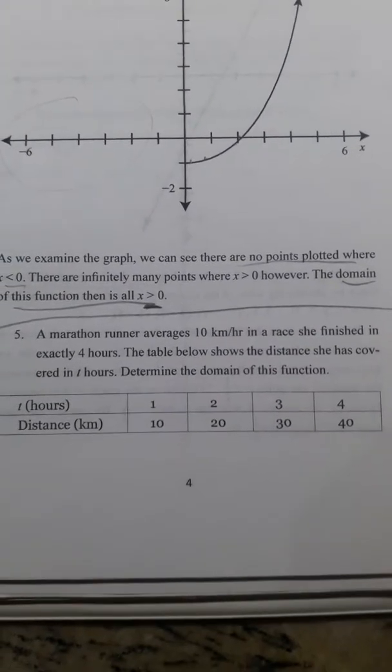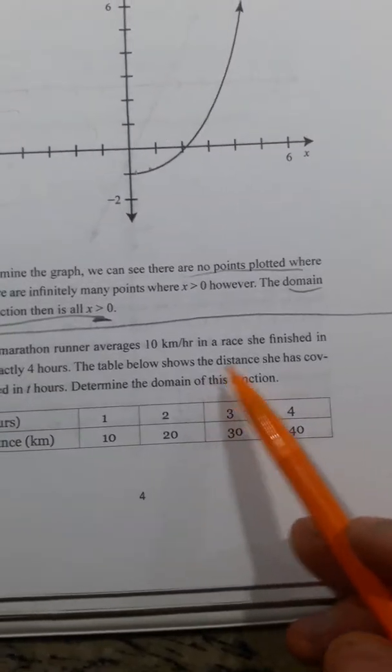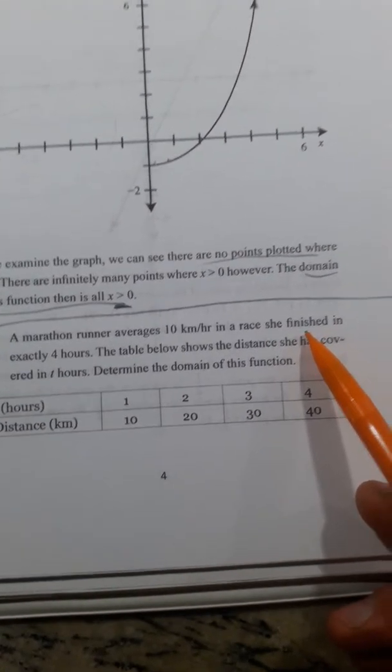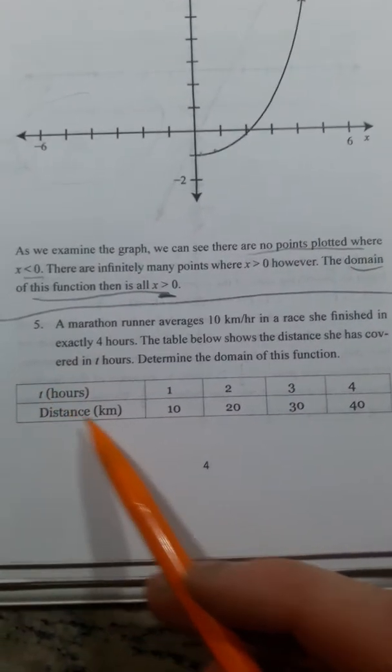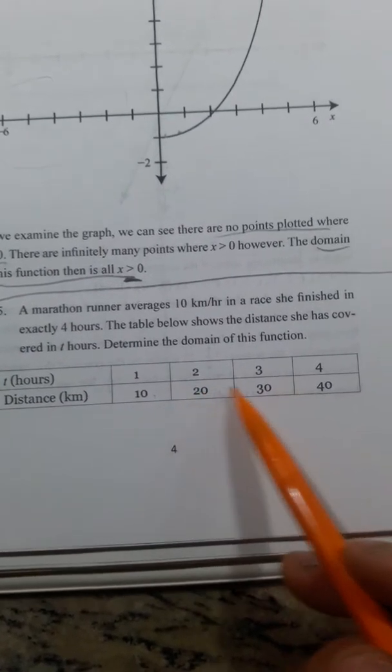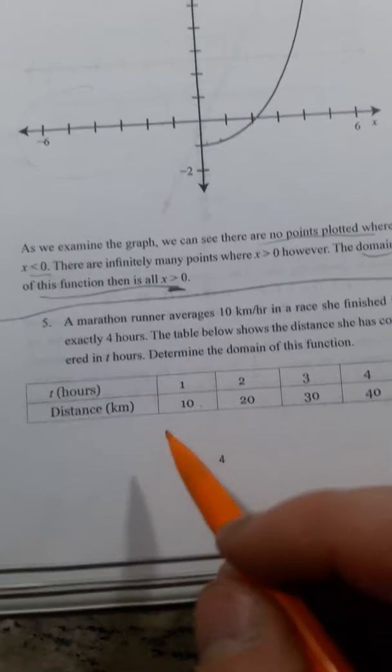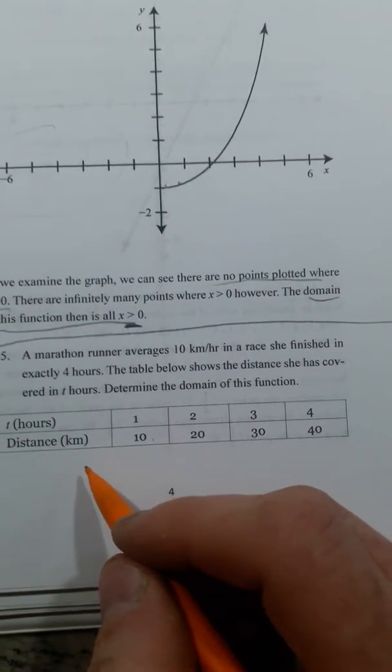Here's another example. Marathon runner runs 10 kilometers per hour. Finish the race in exactly 4 hours. So here shows the distance and the hours.